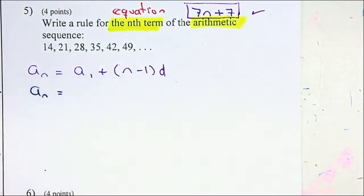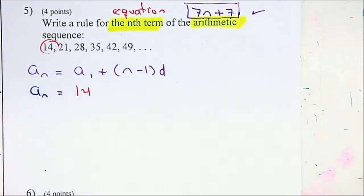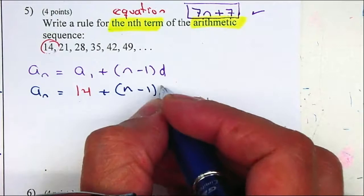a sub n is equal to a sub 1, which is the first number, that is 14, plus, n minus 1, multiplied by the difference.